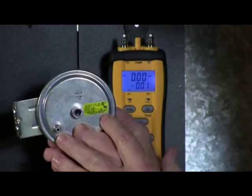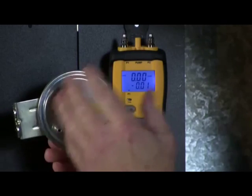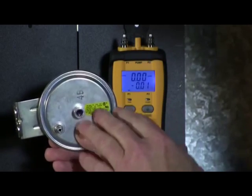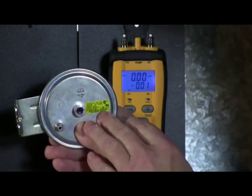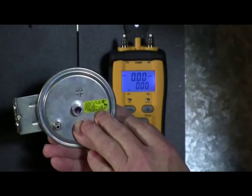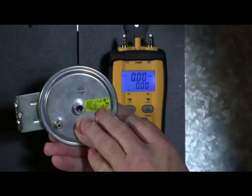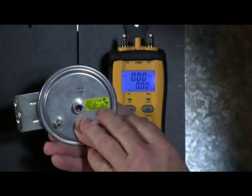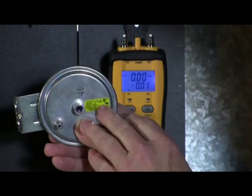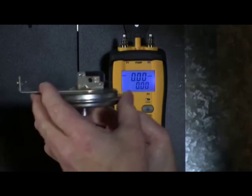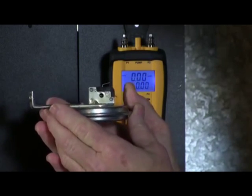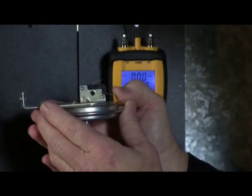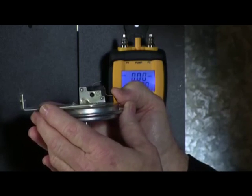On this particular switch, you'll see it only has two terminals. It has a common and a normally open. Those are the terminals that you would use to test the switch. Some switches have a third terminal, and in that case that would be a normally closed. You do not want to use that, even on a three terminal switch. You would just use the common and normally open.